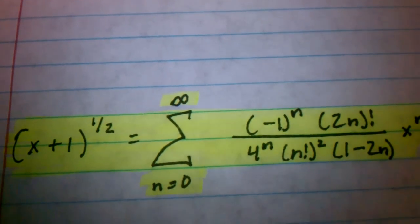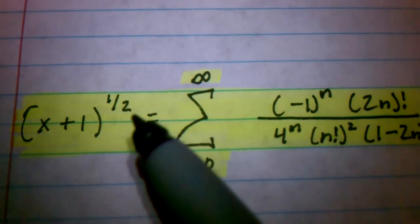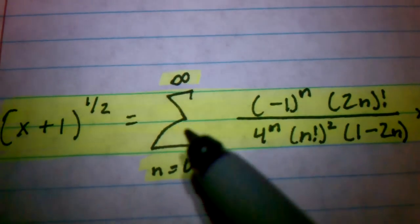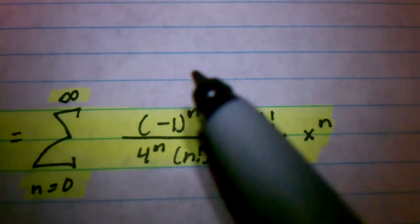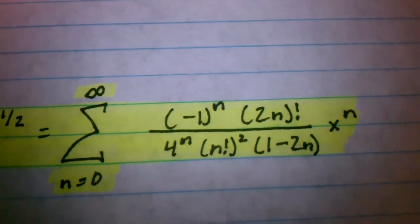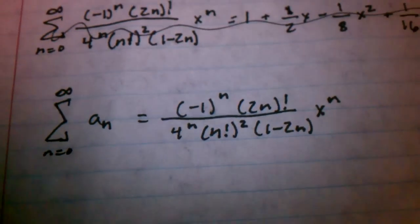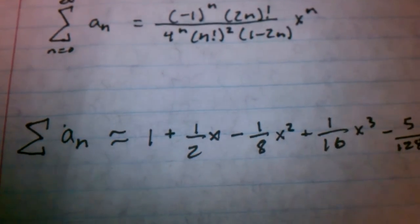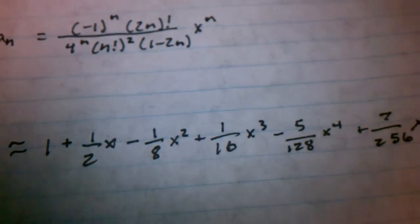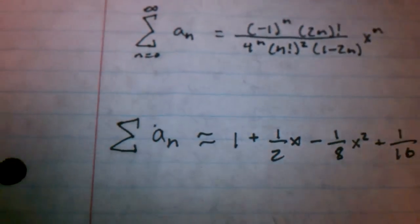So, our final function of x plus 1 to the 1 half of the Maclaurin or Taylor series as n equals 0 and approaches infinity. Here it is, ladies and gentlemen. There it is. And, if you want to see it expanded a little bit, here's the equation again. And, here's the expansion as you go, n equals 0, 1, 2, 3, on and on, yada, yada, yada. And, it continues on.